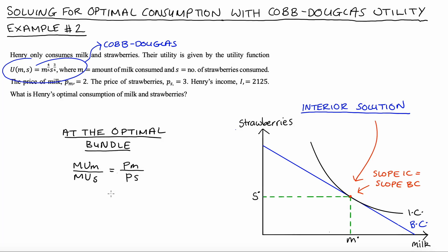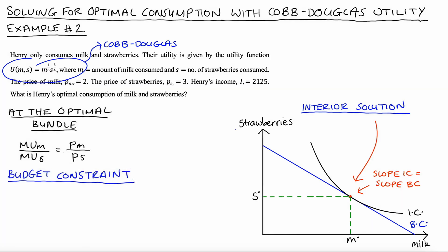To solve this, I first need to find the budget constraint for Henry. Abstractly, the budget constraint is the price of milk p_m times milk consumed plus the price of strawberries p_s times strawberries consumed, equal to Henry's income I. From the question: price of milk is 2, price of strawberries is 3, and Henry's income is 2,125. So the budget constraint is 2m plus 3s equals 2,125.